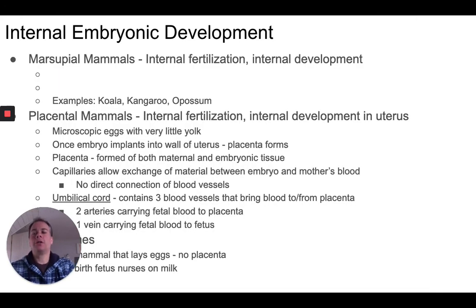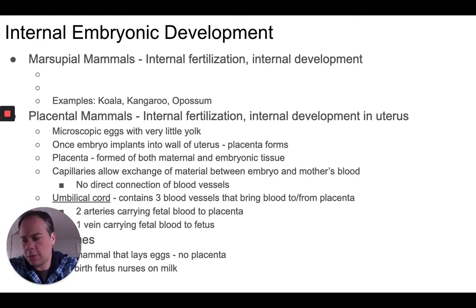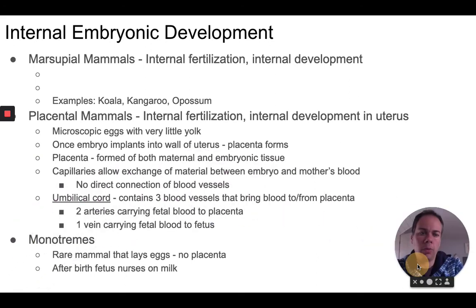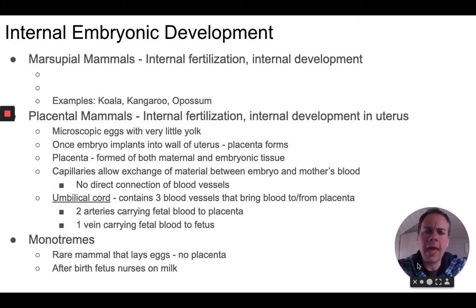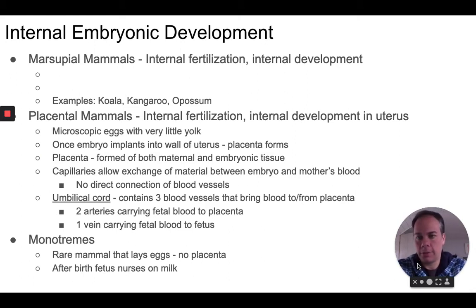Now let's talk about internal development. Amphibians and birds have external embryonic development inside an egg, but mammals have internal embryonic development. Fertilization takes place inside the female's body, and then the developing embryo is also retained inside the female body where it completes its development until birth. That's how most mammals reproduce.